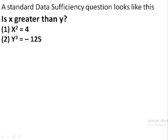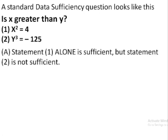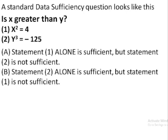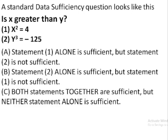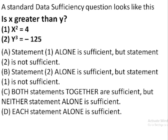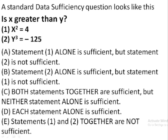The answer choices can be one of five options. Choice A: statement 1 alone is sufficient, but statement 2 alone is not sufficient. Choice B: statement 2 alone is sufficient, and statement 1 is not sufficient. Choice C: both statements together are sufficient, but neither statement alone is sufficient. Choice D: both of them alone are sufficient. And Choice E: there is not enough information and we are not able to solve the problem even if both statements are given to us.